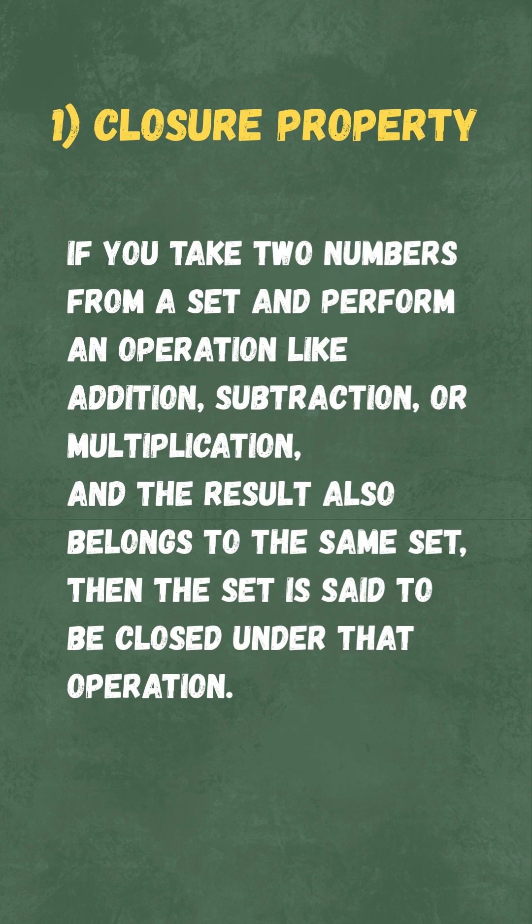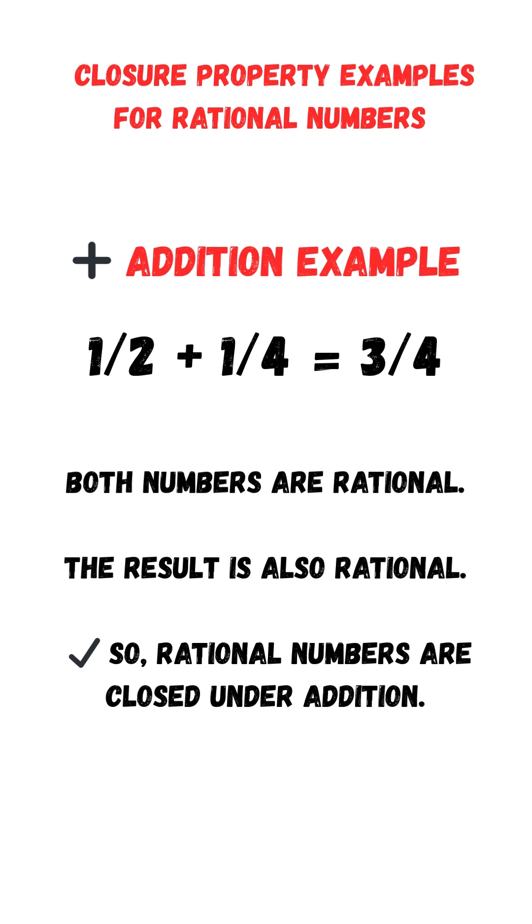Now, let's test this on rational numbers. Closure property examples for rational numbers. Addition example: 1 half plus 1 fourth equals 3 fourths. Both numbers are rational. The result is also rational. So, rational numbers are closed under addition.